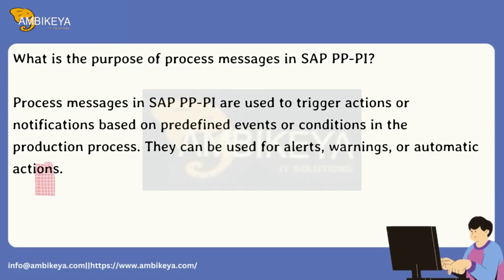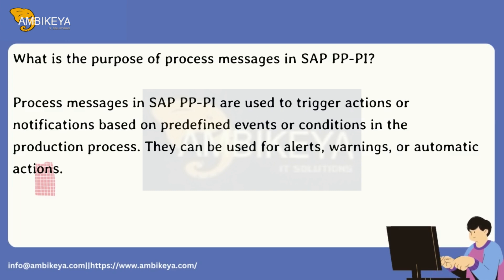What is the purpose of process messages in SAP PP-PI? Process messages in SAP PP-PI are used to trigger actions or notifications based on predefined events or conditions in the production process. They can be used for alerts, warnings, or automatic actions.